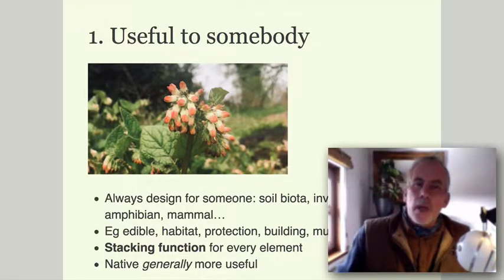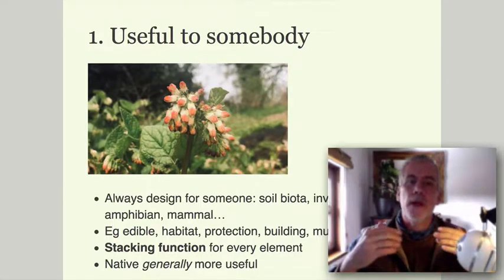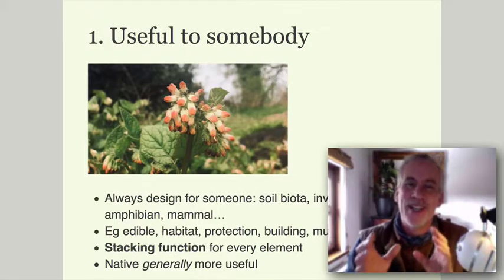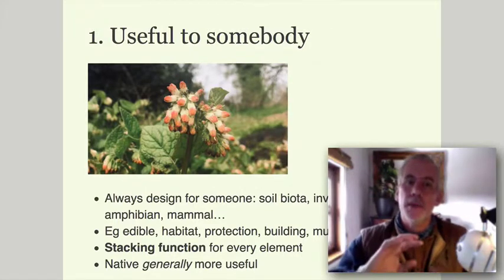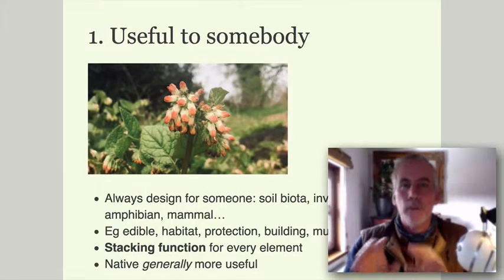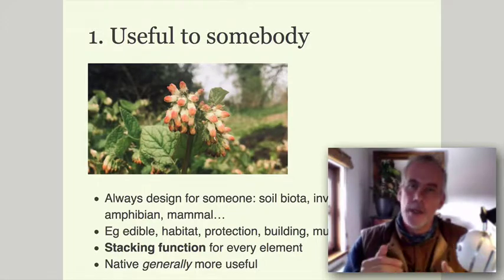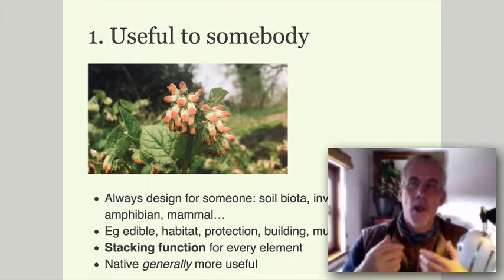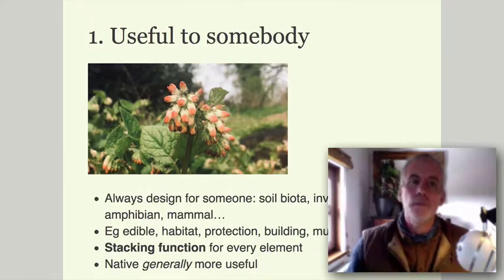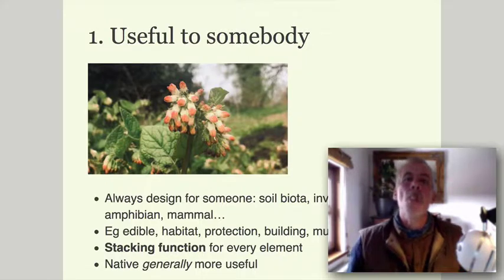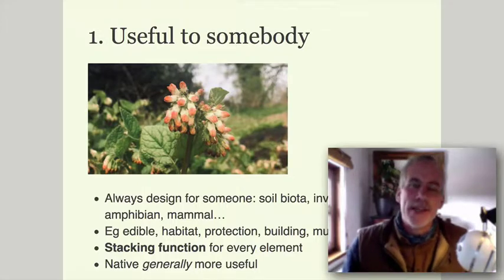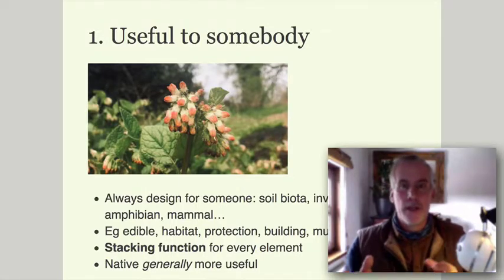First, a garden really ought to be useful to somebody, and that somebody includes wildlife — it's not just about people, it's about everything that inhabits your garden as well. This is a principle of forest and wildlife gardening: you're working with nature, providing a habitat and food source for nature so that it looks after the garden as a whole.